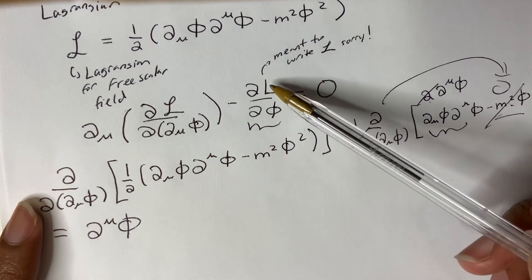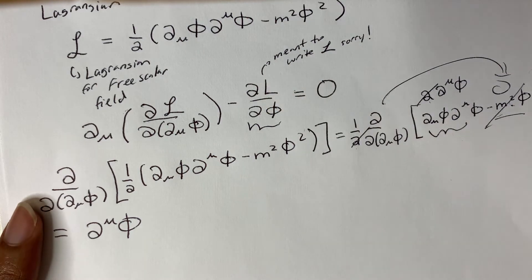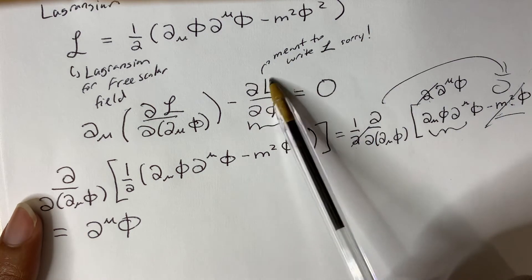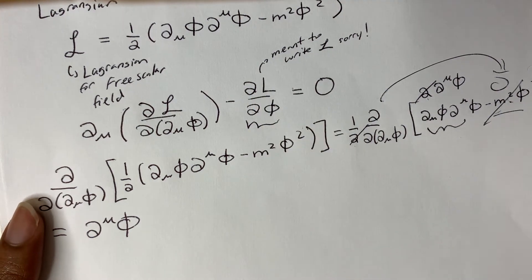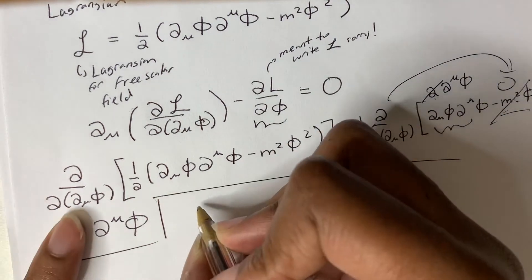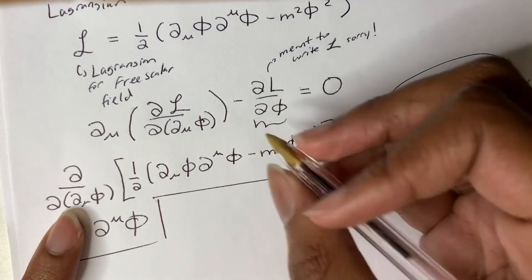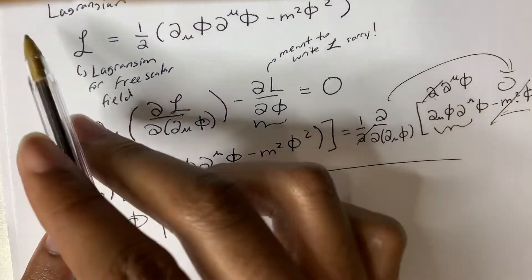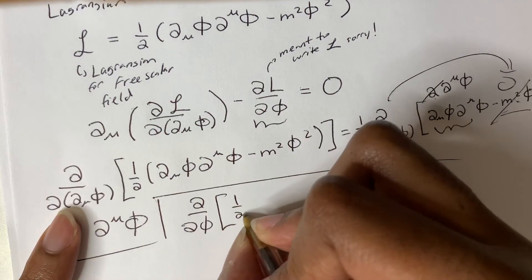Now, I accidentally wrote the normal L for the Lagrangian density, but it should be the curly L. So this is the Lagrangian density, just wrote a normal L on accident. So to calculate this, we just take the partial derivative with respect to phi of this density. Just plugging it in.